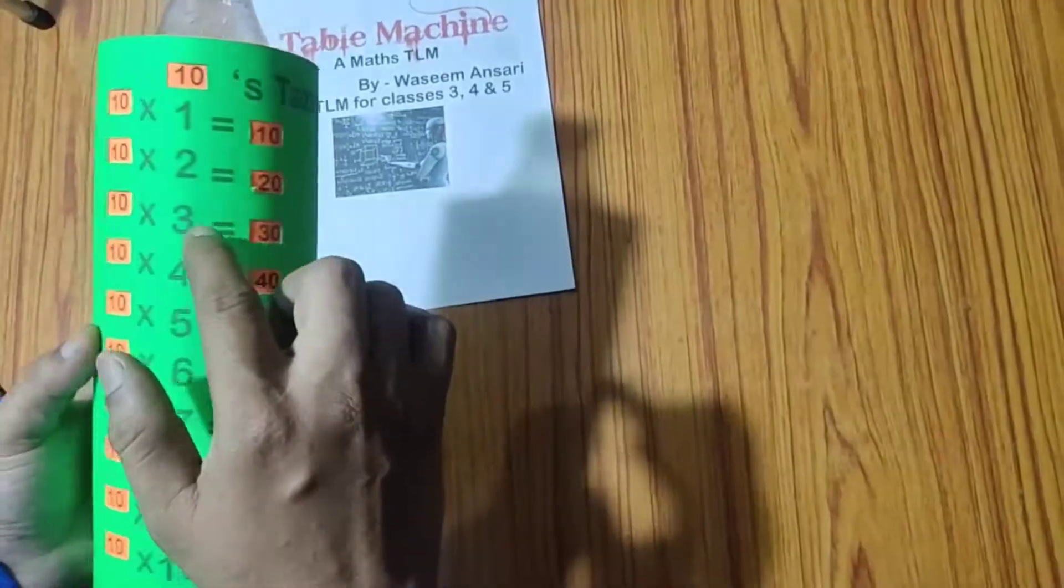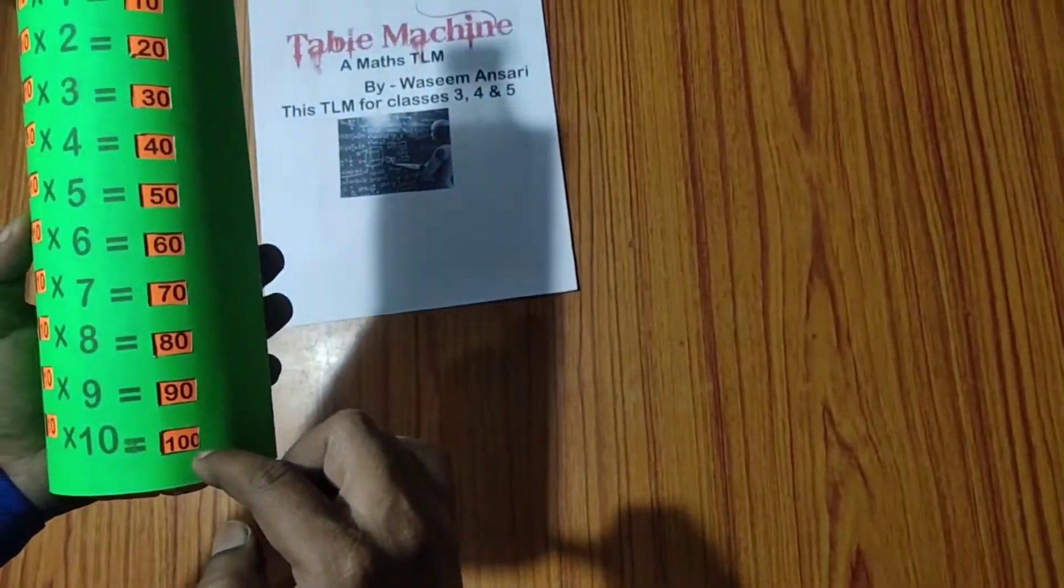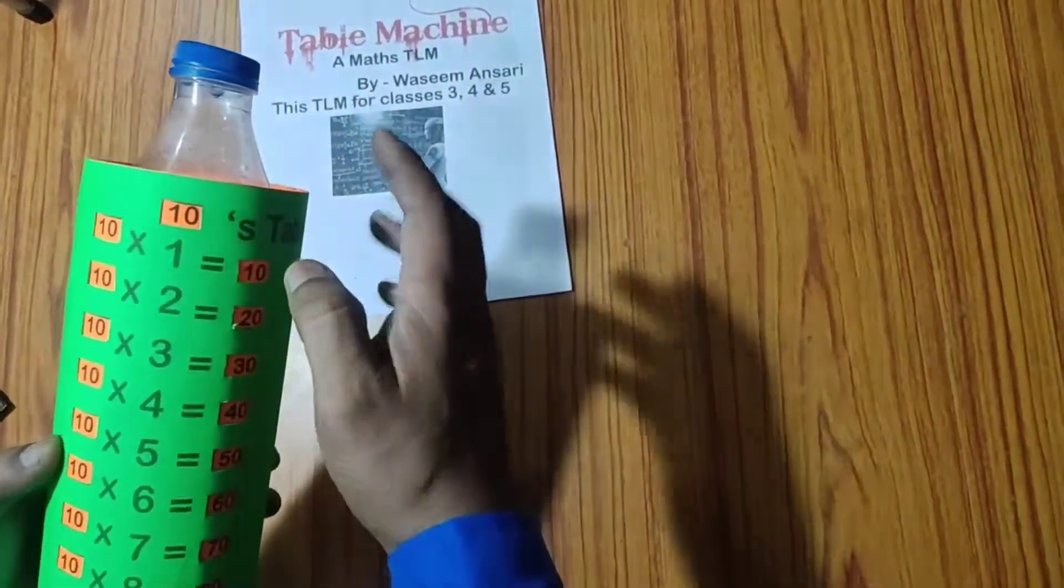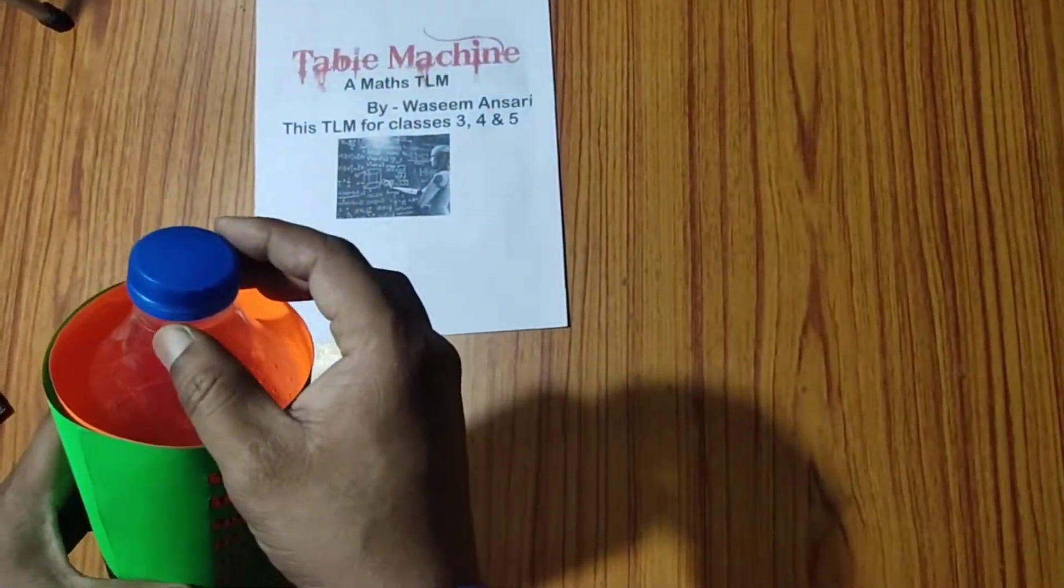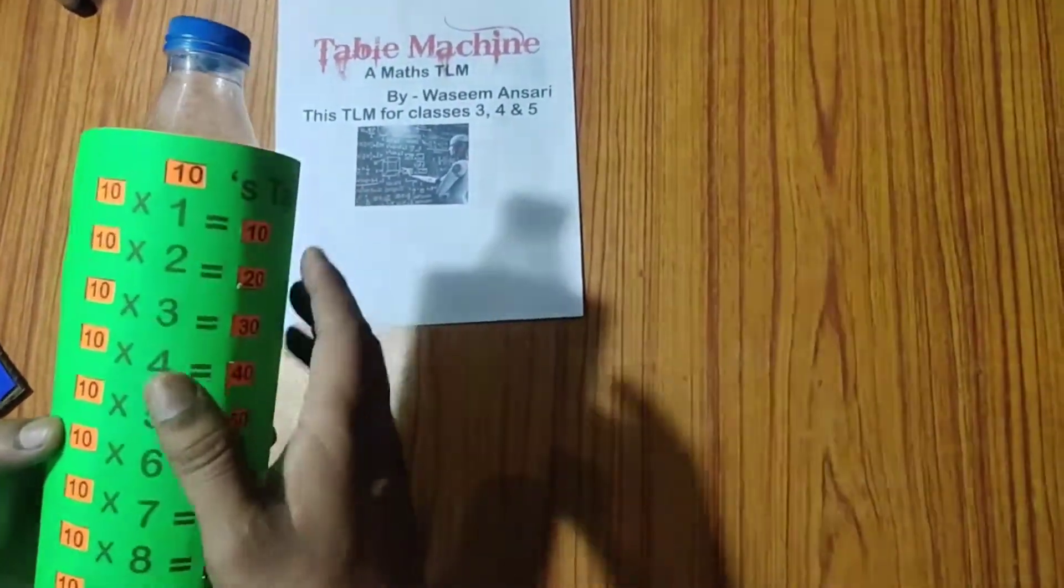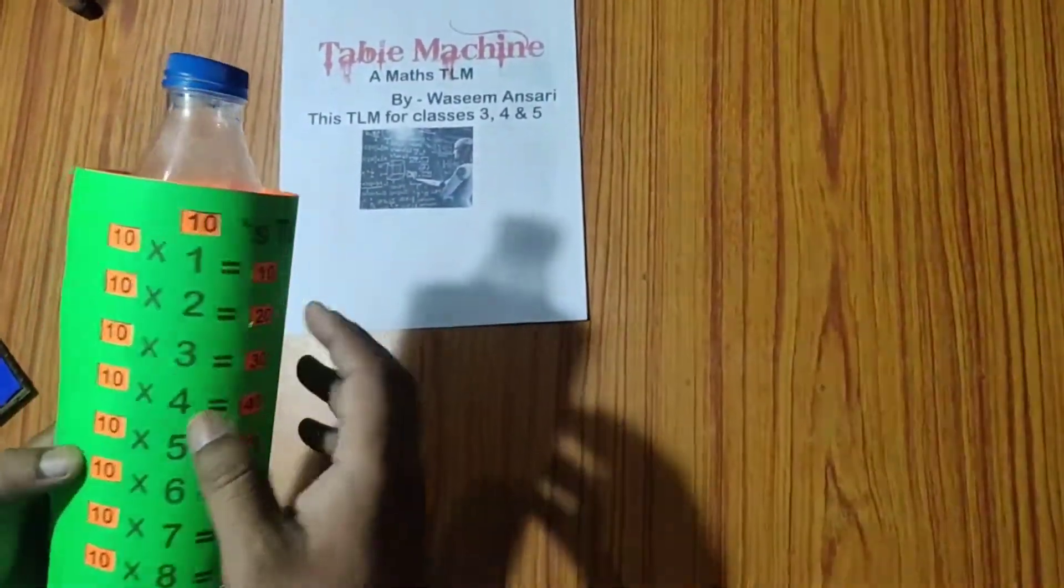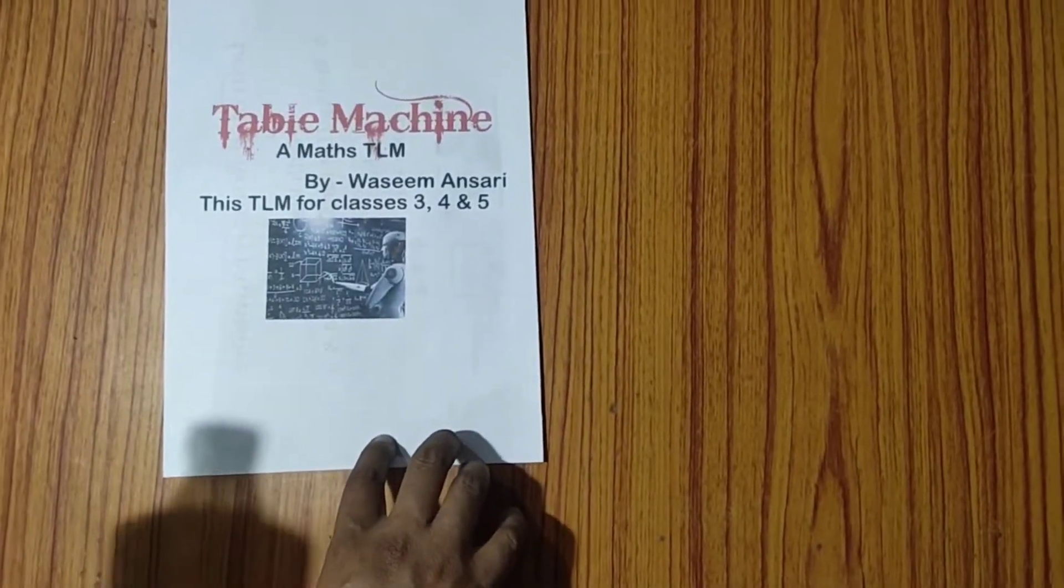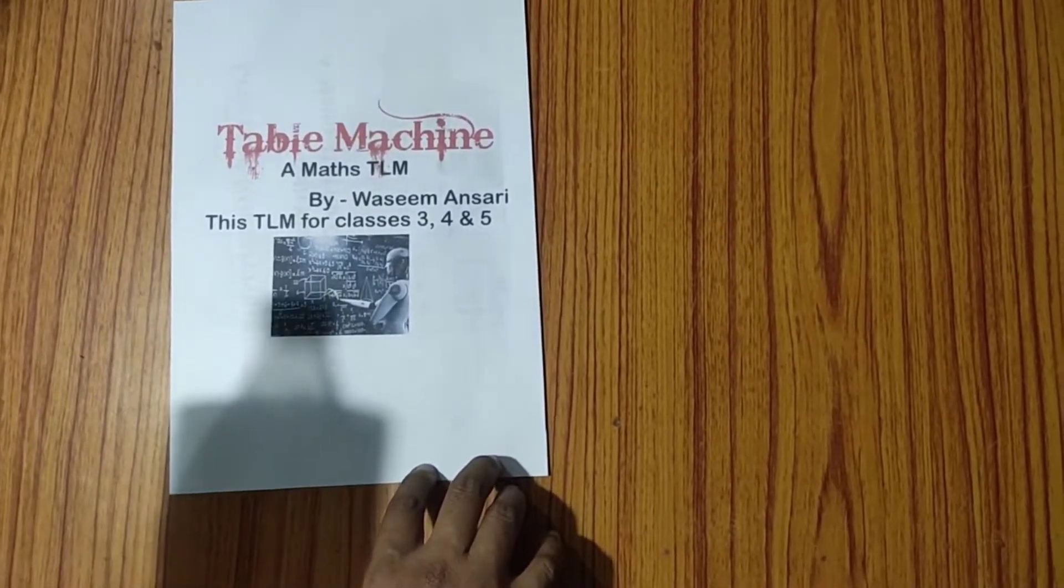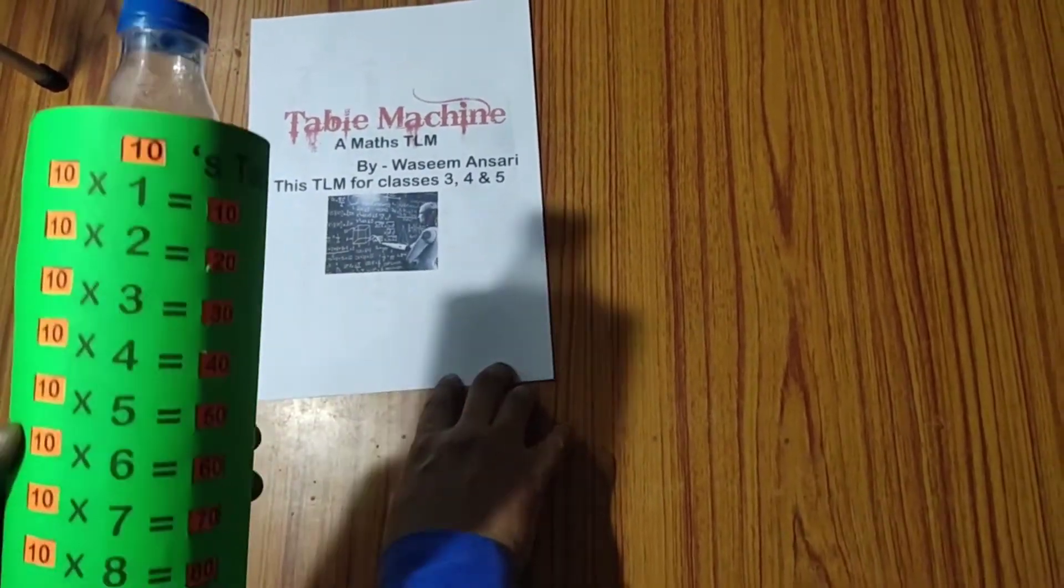And then we have the table of 10. 10, 1 jar, 10. 10, 2 jar, 20. And till 100. We get it. And this is our table machine, which can be easily prepared with the help of this waste bottle and some sheets. And numbers can be written on it. And this maths TLM, that is the table machine, can easily be prepared for the classes 3, 4 and 5. Thank you and have a nice day.